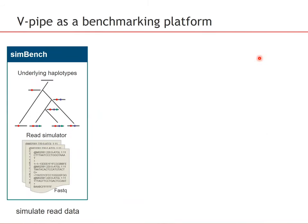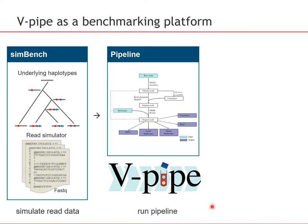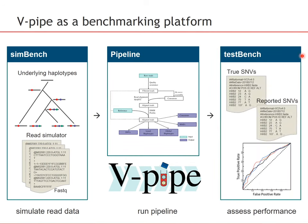To support custom pipelines, vPipe offers a benchmarking platform. This platform contains a module for simulating data — it assumes some true dependency structure among haplotypes and generates simulated reads from this assumed population structure. In the second step, the pipeline is run on these simulated data, either the standard pipeline or any user-specified variation. In the last step, there is support for assessing pipeline performance by comparing the simulated data to the estimates of genetic diversity derived using the pipeline.